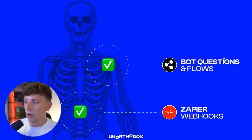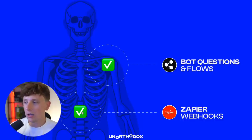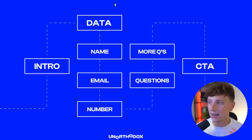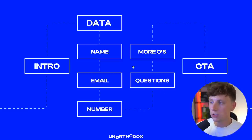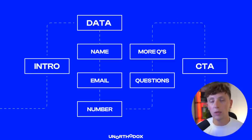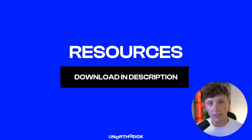In this video we're going to cover two aspects: setting up the bot skeleton in BotPress and setting up the Zapier webhook to integrate into Google Sheets or a CRM. The main goal is an intro sequence, collecting data like name, email, and phone number, then allowing the user to ask questions in a constant feedback loop until they're done, and finally feeding them into a CTA — booking a call. The template resources are linked in the description below, and join our Discord community.